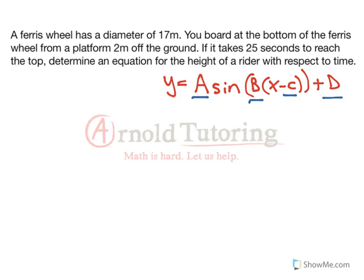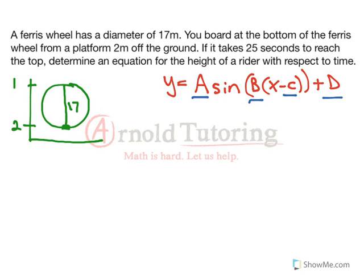Let's look at the situation we have in this question. A Ferris wheel has a diameter of 17 meters, so I'm going to draw a picture here — this isn't really the function, but we know the diameter is 17 meters. You board at the bottom of the Ferris wheel from a platform 2 meters off the ground, so the minimum is 2. Adding 17 more means the maximum must be 19. And we know it takes 25 seconds to reach the top from the bottom — so that path is 25 seconds.